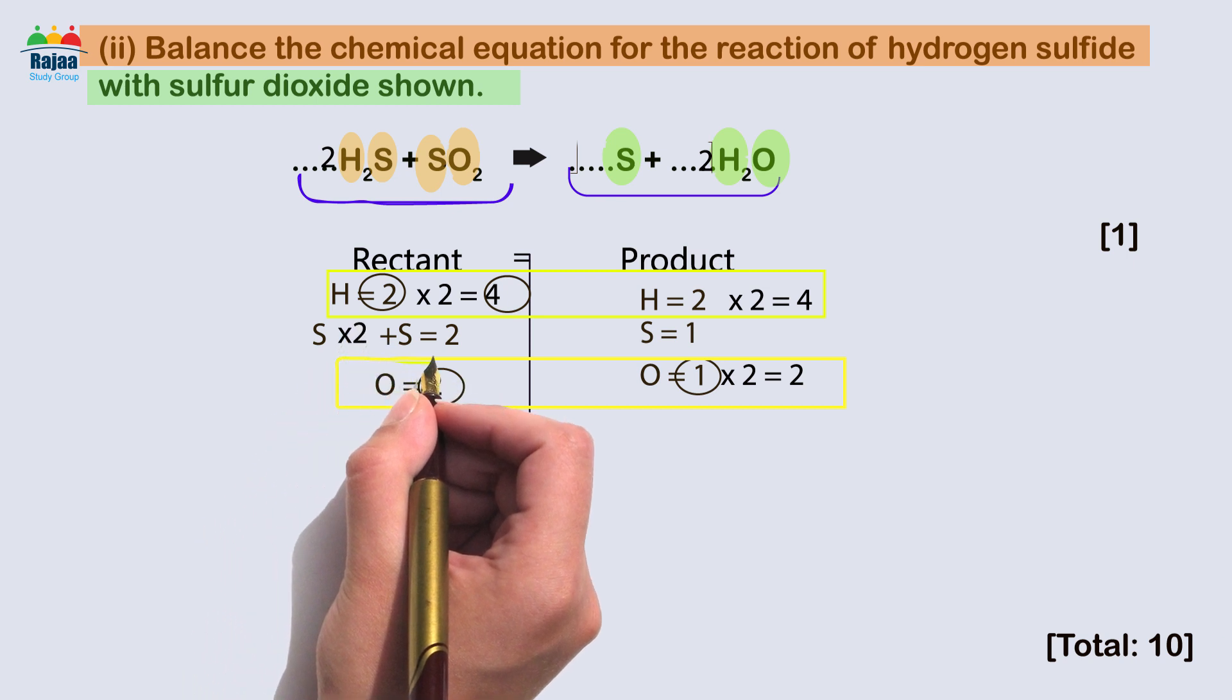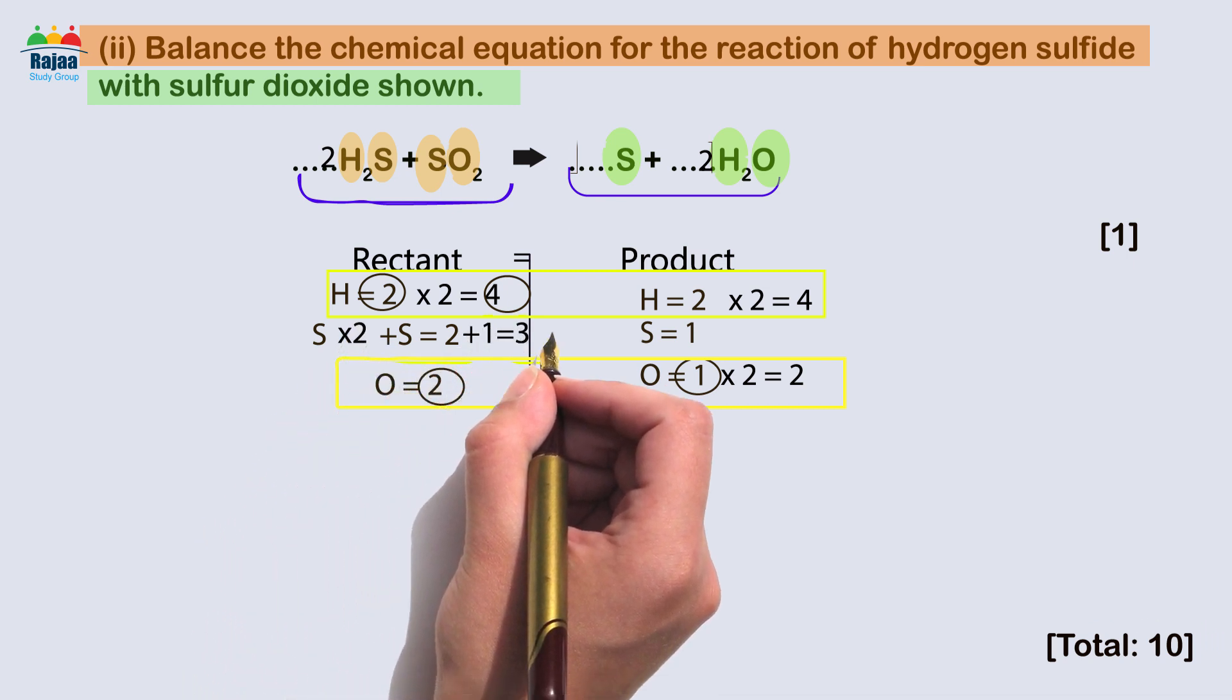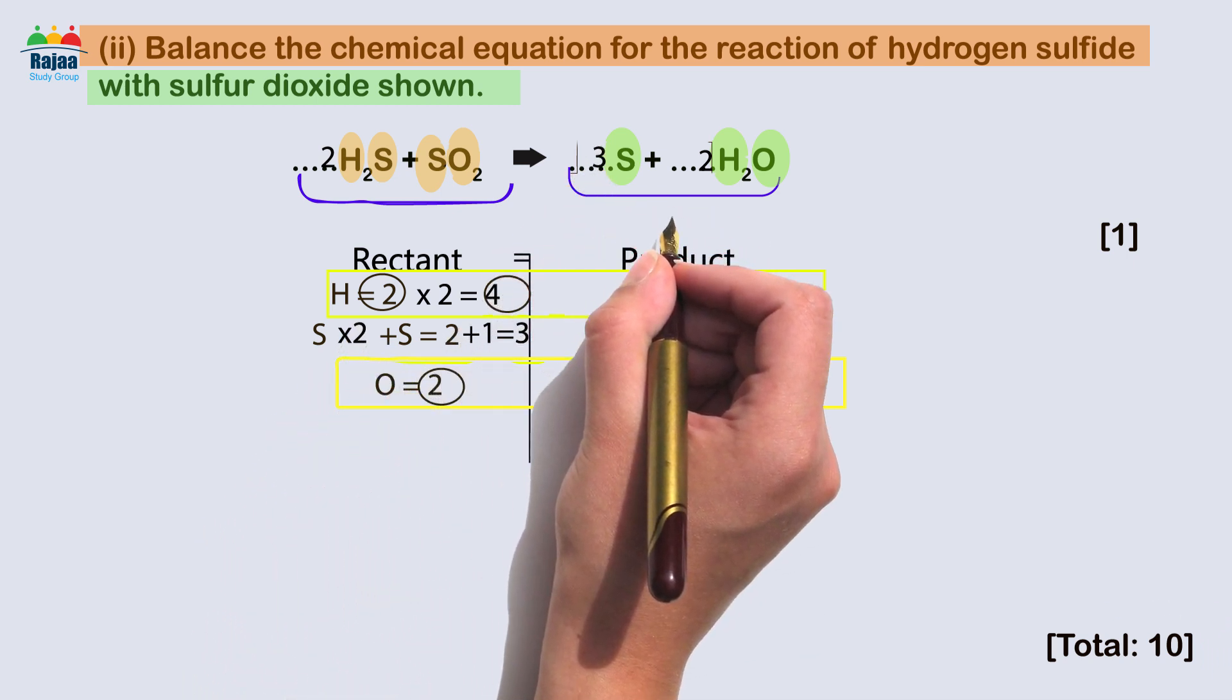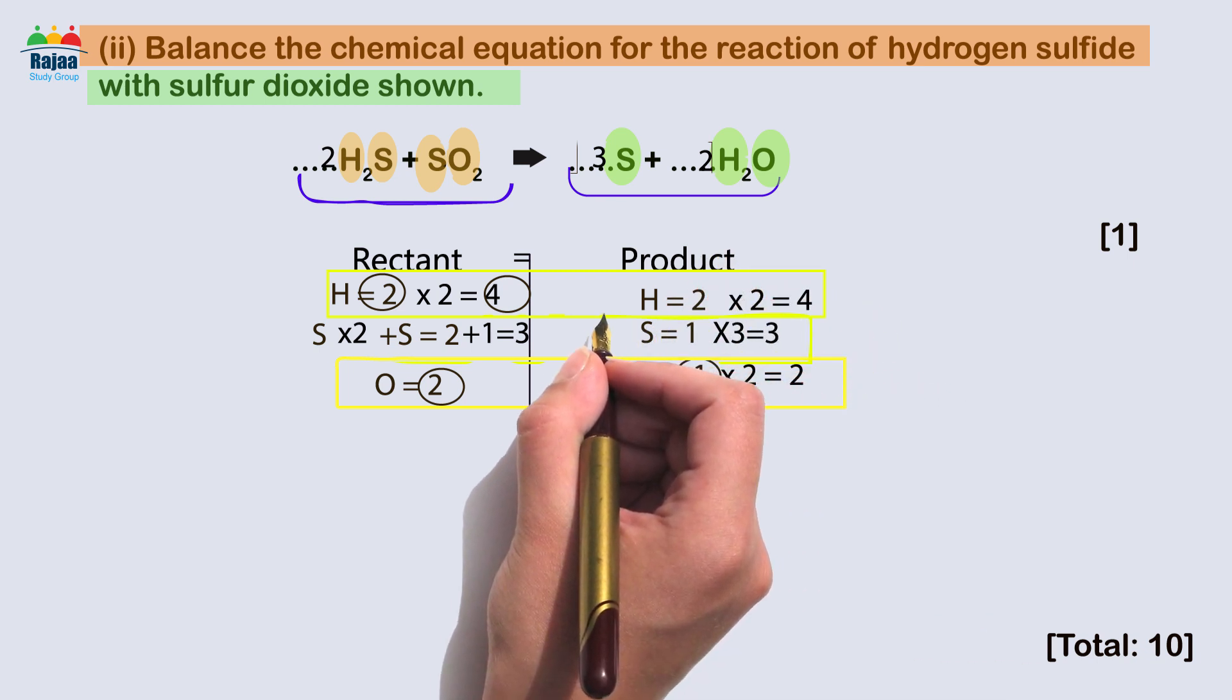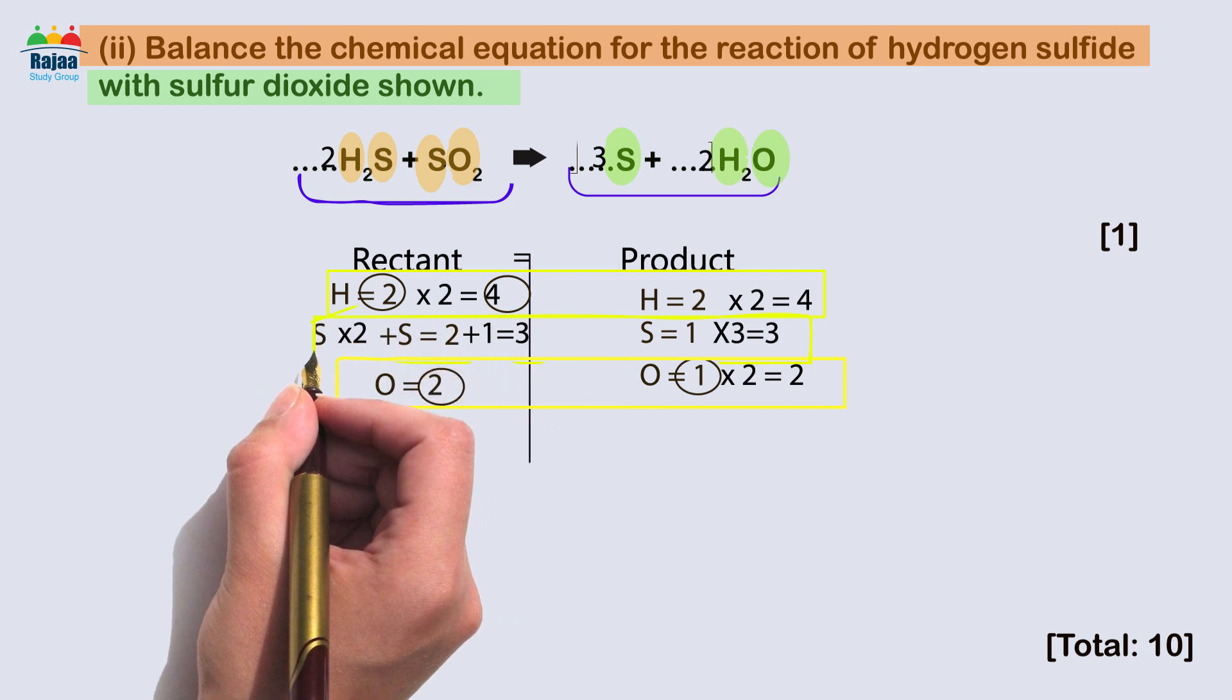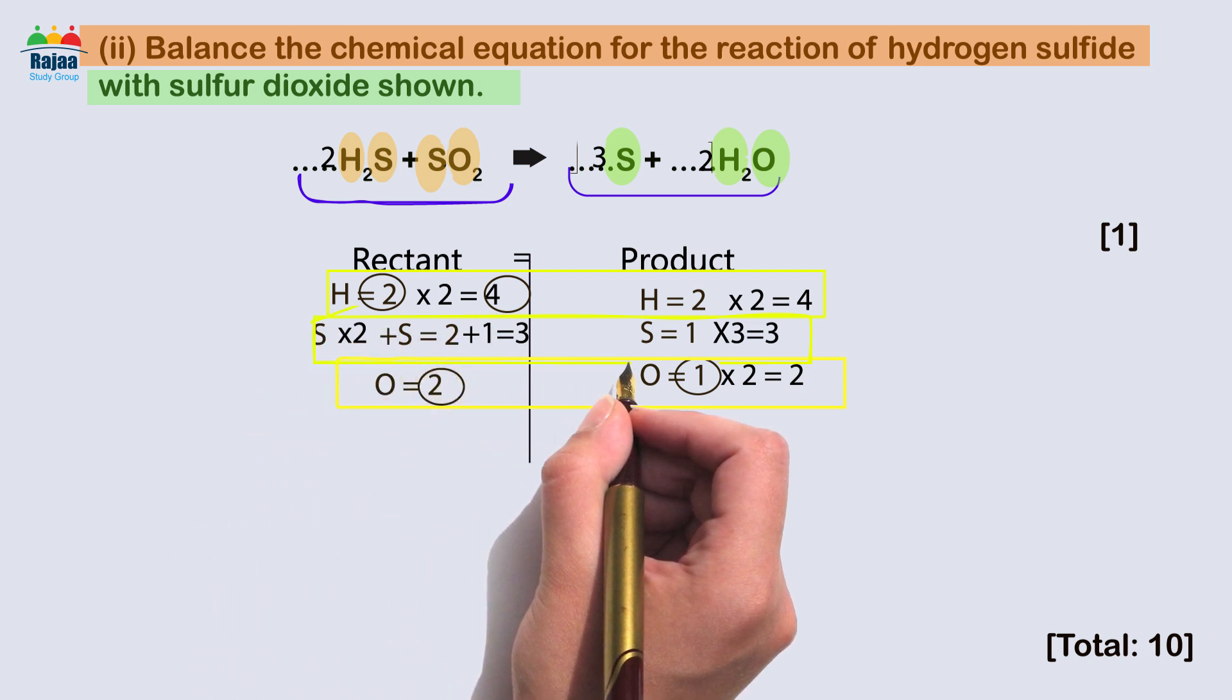So after adding coefficient two to H2S, count the sulfur atom again. So the new sulfur count is two times one equals two sulfur. You must add to them another sulfur, so the total sulfur in the reactant side equals three. To balance the sulfur on the product side, add coefficient three. All of the equations are now in balance.